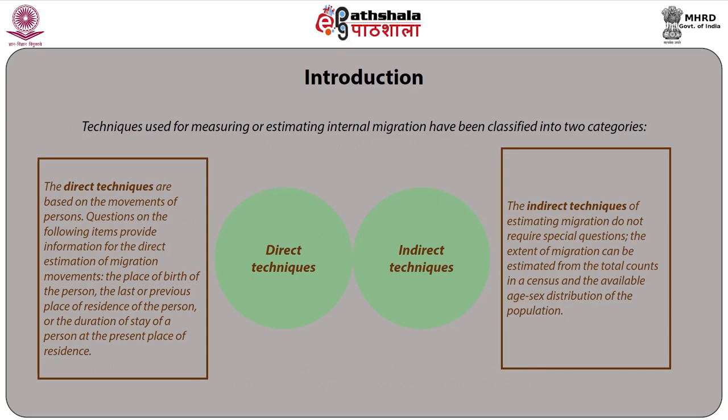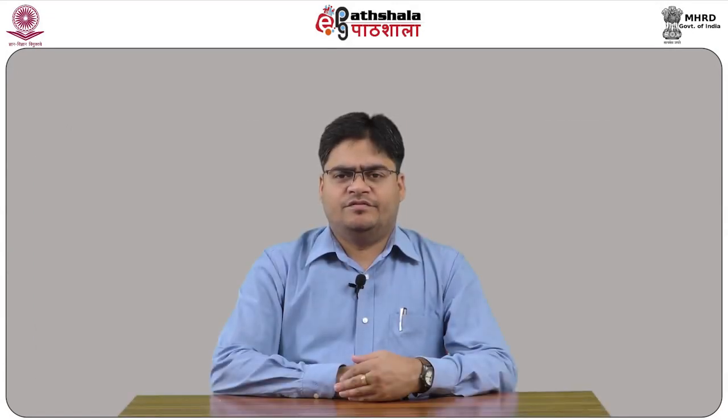The direct techniques are based on the movements of persons. Questions on the following items provide information for the direct estimation of migration movements: the place of birth of the person, the last or previous place of residence, or the duration of stay at the present place of residence. The indirect techniques do not require special questions; the extent of migration can be estimated from total census counts and the available age-sex distribution of the population. Estimation of lifetime migration from place of birth data is one of the most important direct techniques.